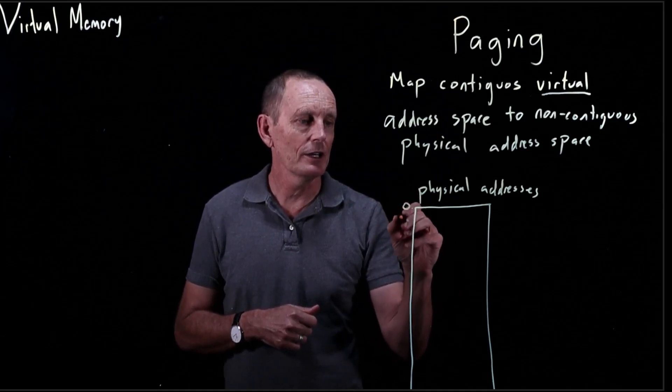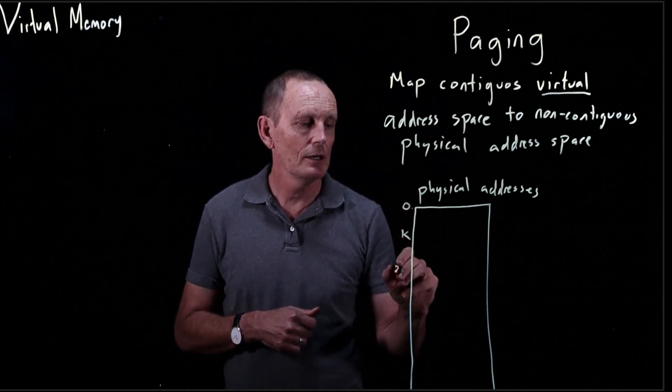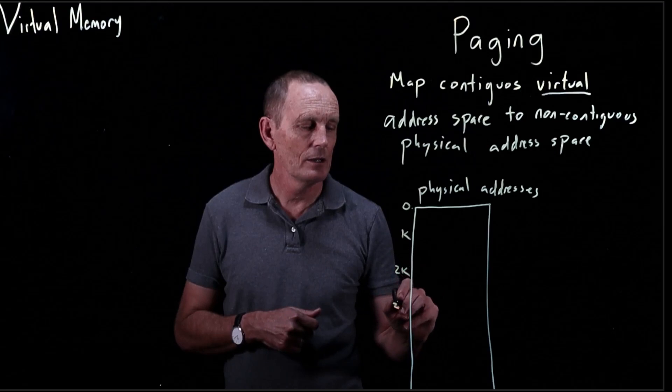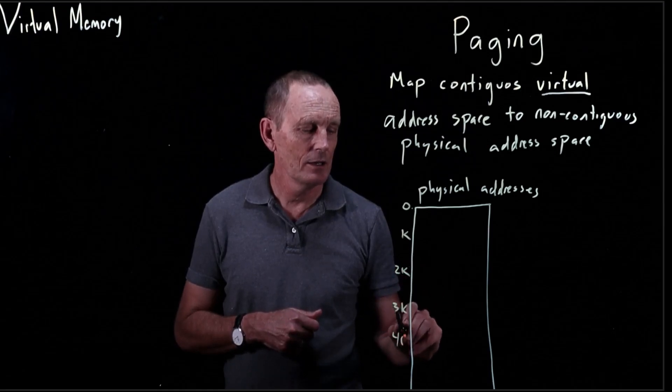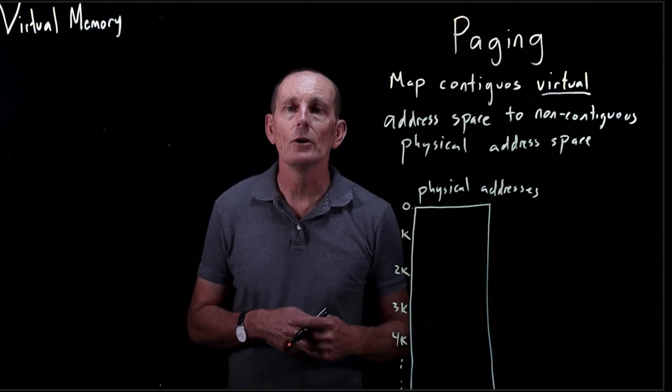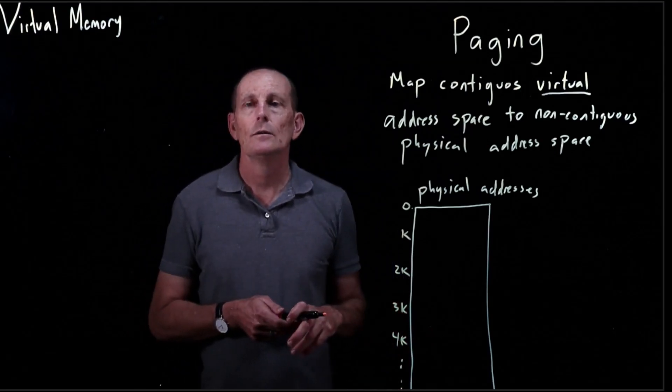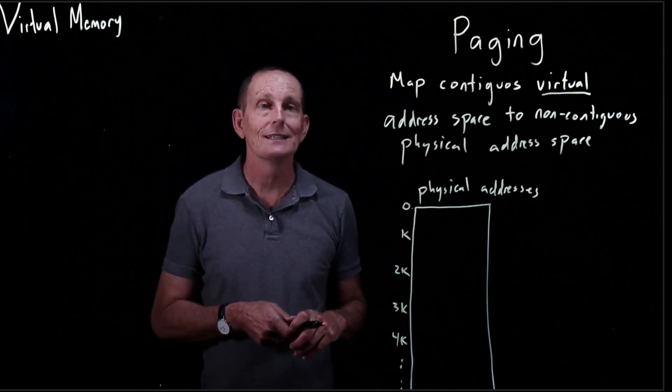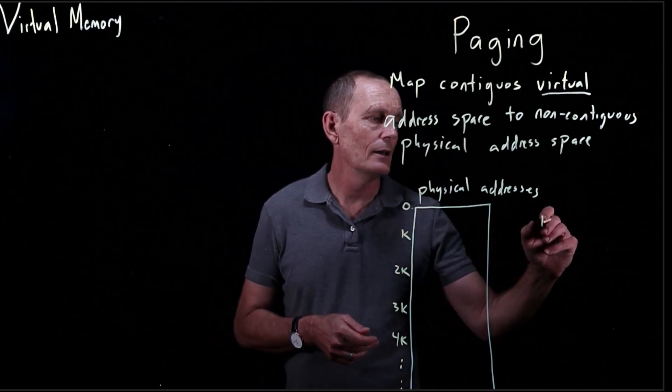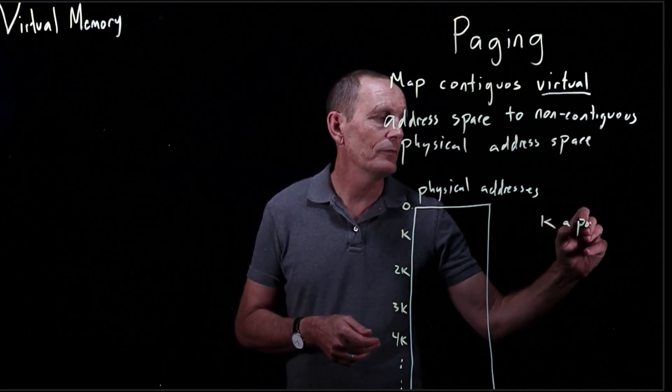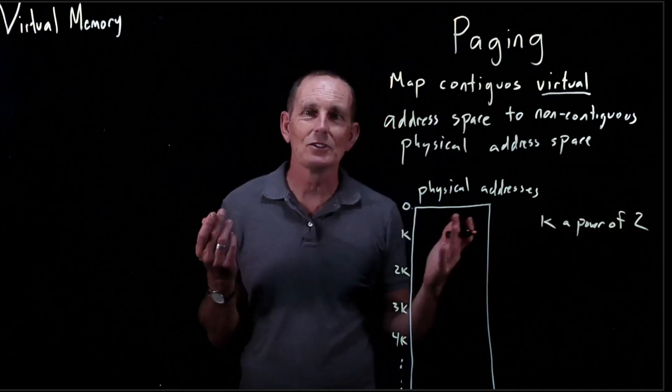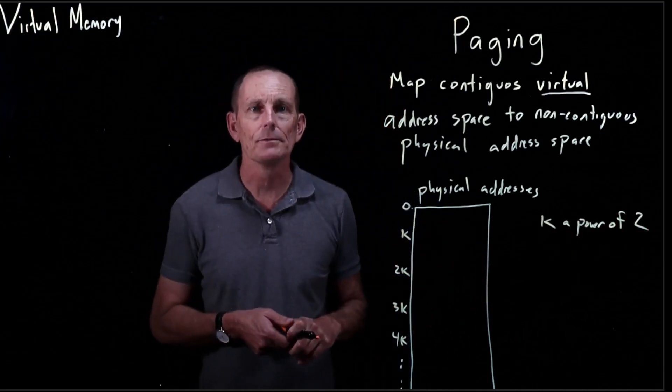So we have pages starting at 0, k, 2k, 3k, 4k, etc. Our page size or frame size is k, a power of 2. That's because pretty much all numbers in computer science are powers of 2.